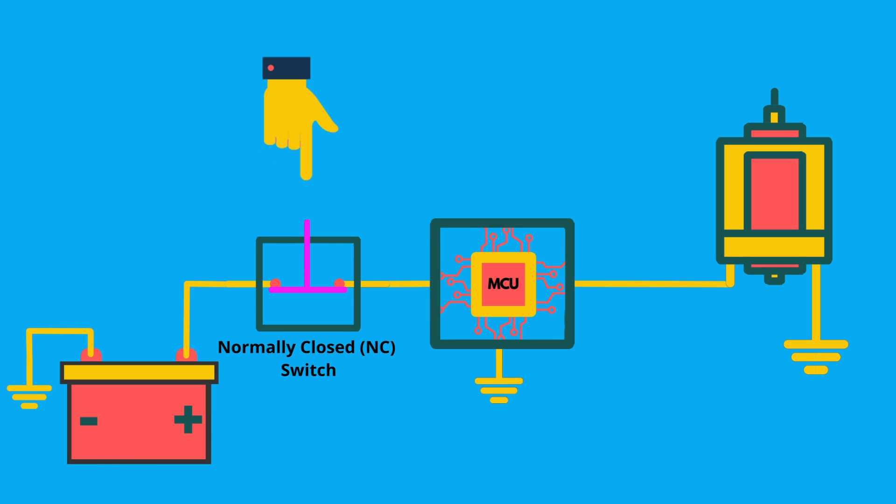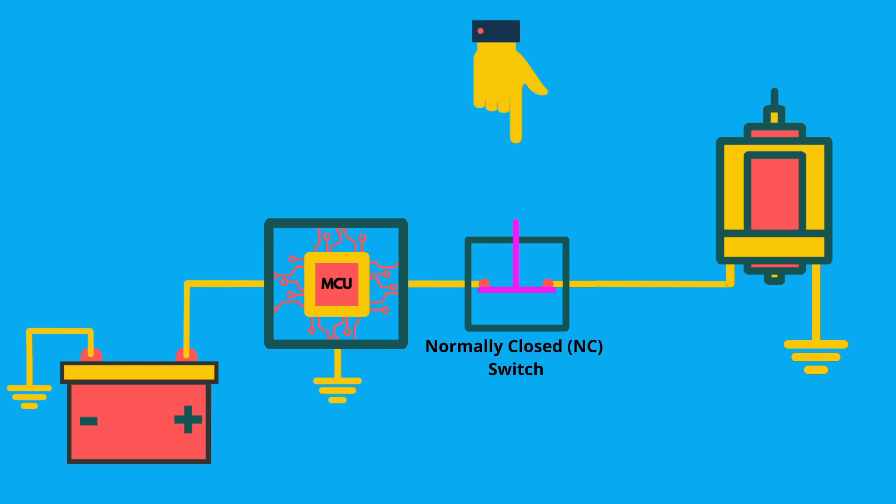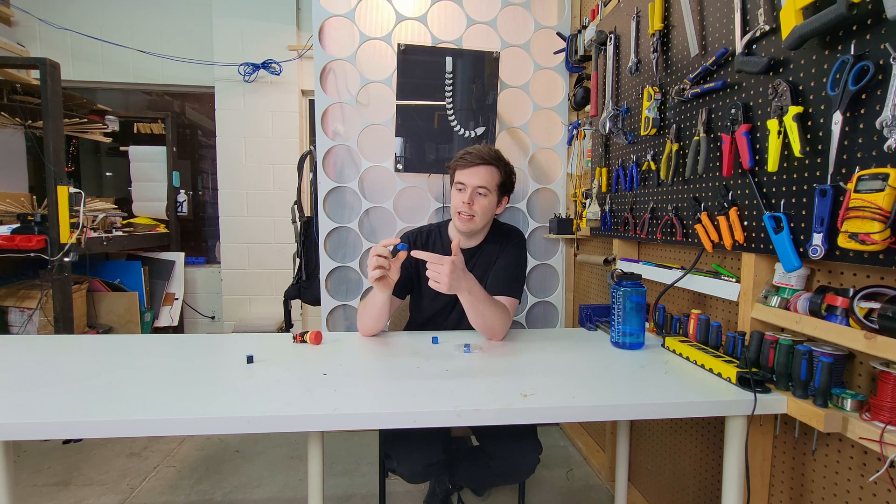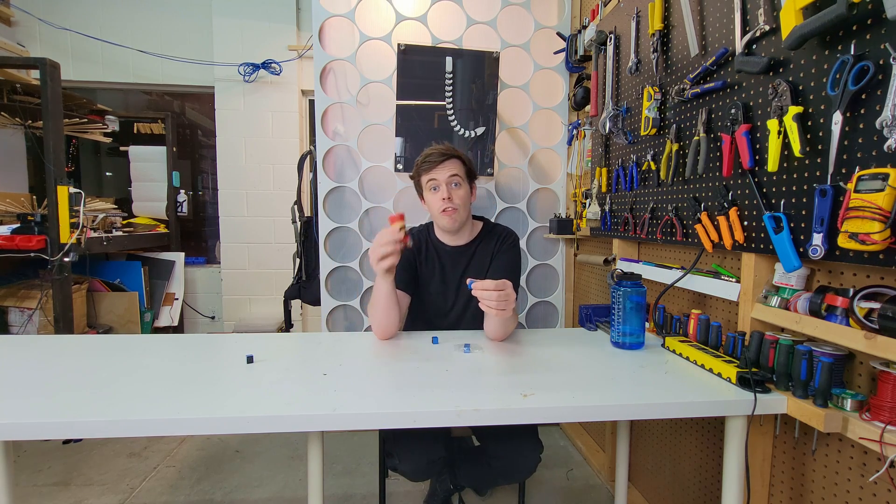Admittedly, we could resolve the second issue by moving the switch between the controller and the motors. That way, the controller can still be powered even when the switch is open. But the first and third safety conditions are still being violated. To resolve this, we're going to use relays that are triggered by the emergency stop button.